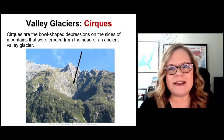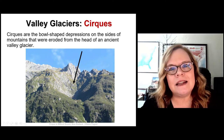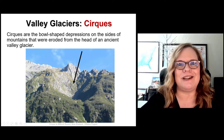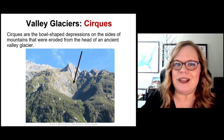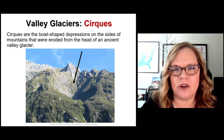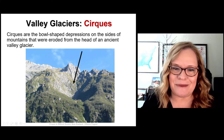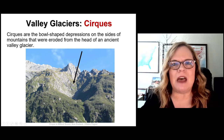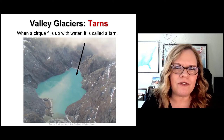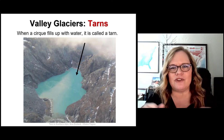Cirques — sometimes pronounced 'sirques' — are the bowl-shaped depressions at the heads of valley glaciers where the original ice developed. They carve out deep depressions at the top of the heads. If you like to bowl ski, you're skiing in a cirque. Once snow or ice is completely gone, the valley glacier leaves this depression at the top of the mountain. If a cirque fills up with water, it creates a unique lake called a tarn — formed where the head of the valley glacier or the cirque used to be.